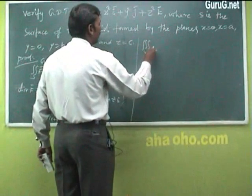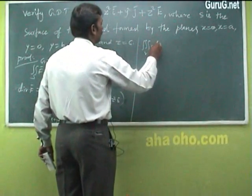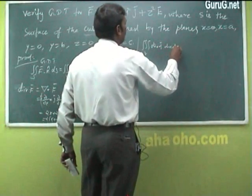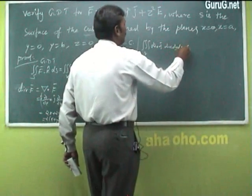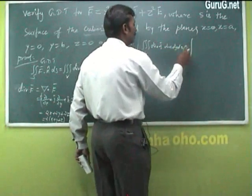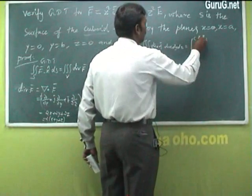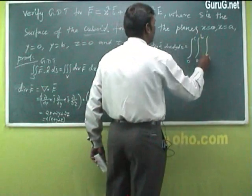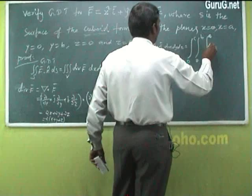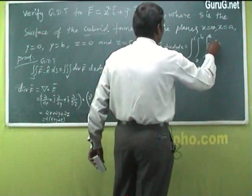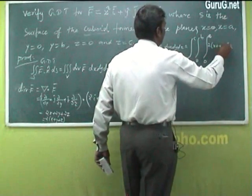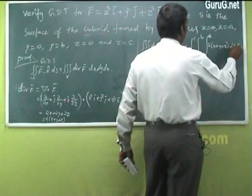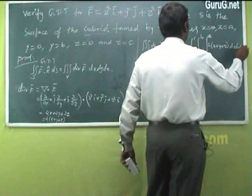Now evaluate the right-hand side: triple integral over V of div F dx dy dz equals the triple integral with z from 0 to c, y from 0 to b, and x from 0 to a of 2(x + y + z) dx dy dz.